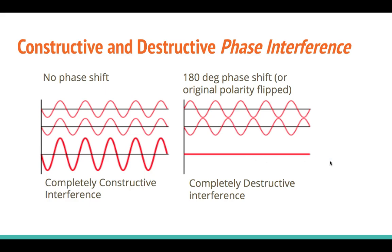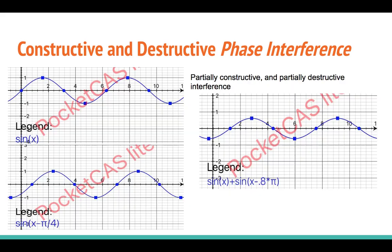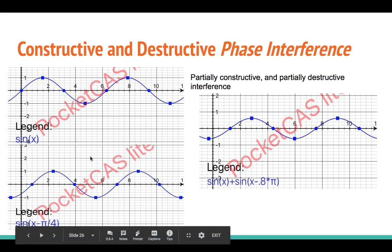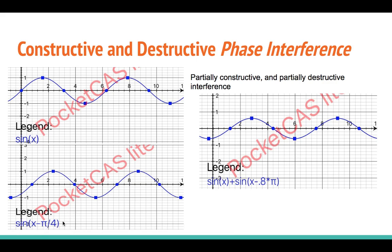The end result might be that we don't measure any pressure changes at all. Now in real world terms, we often don't get completely constructive or completely destructive phase interference. So we can see here two graphs on the left that represent two different waveforms. A sine wave on the top graph, and a sine wave that's been shifted by one quarter of a wavelength, or by 90 degrees.